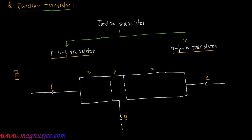In an NPN transistor, this is the N-type emitter, where the majority charge carriers are conduction electrons, and holes are the minority charge carriers. E is the terminal of the emitter.